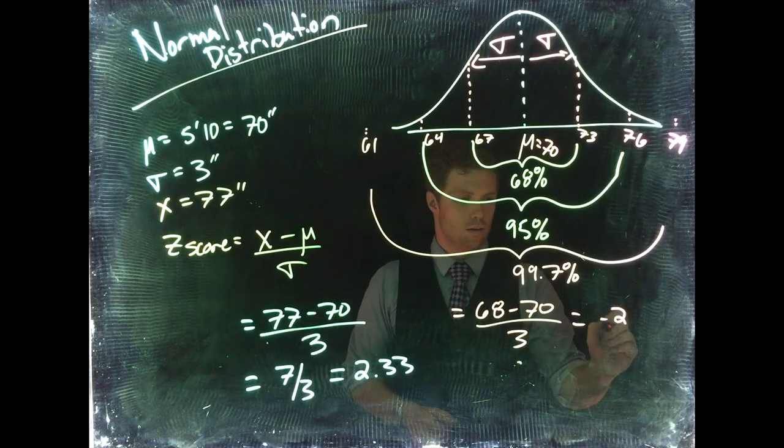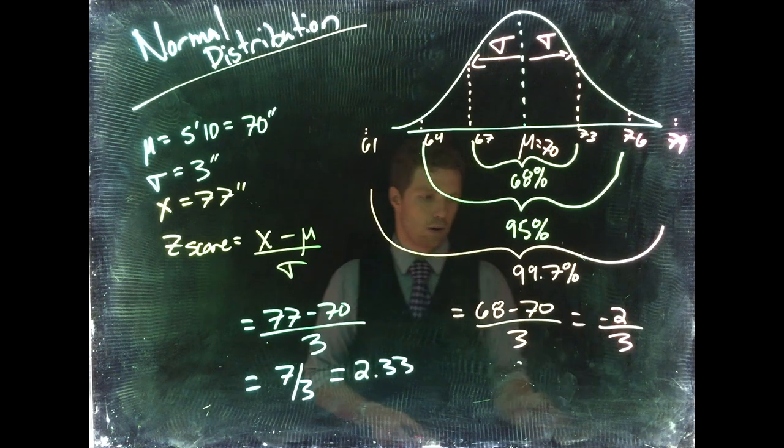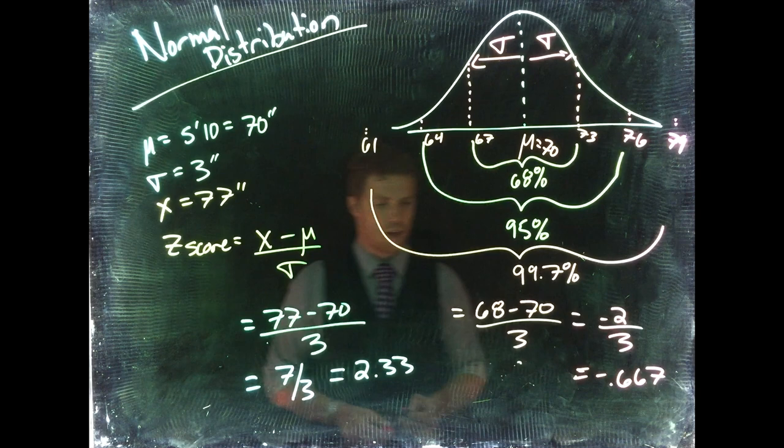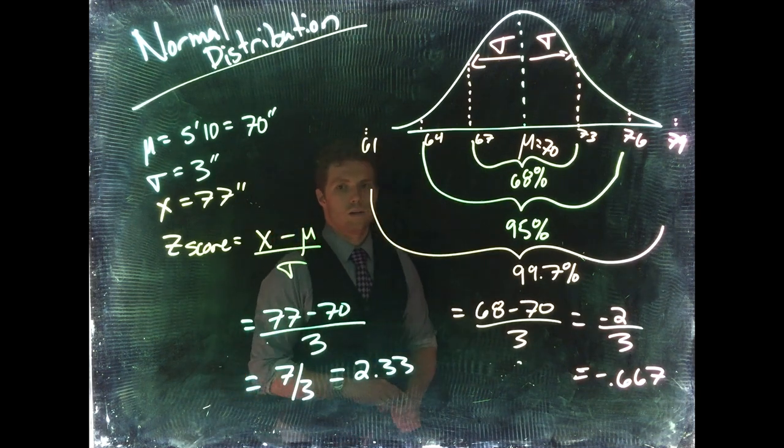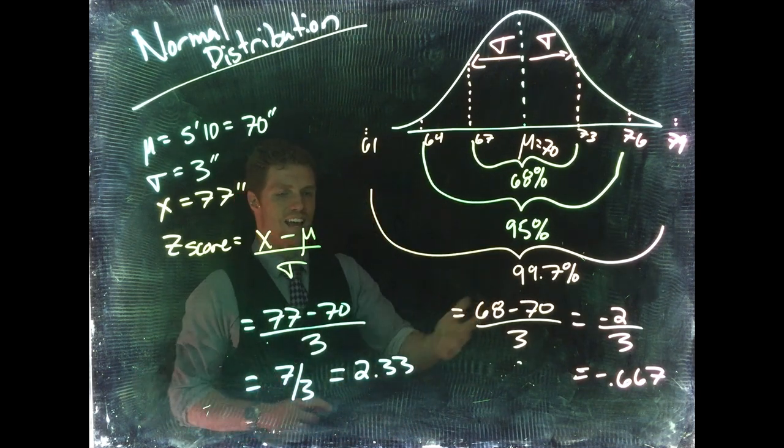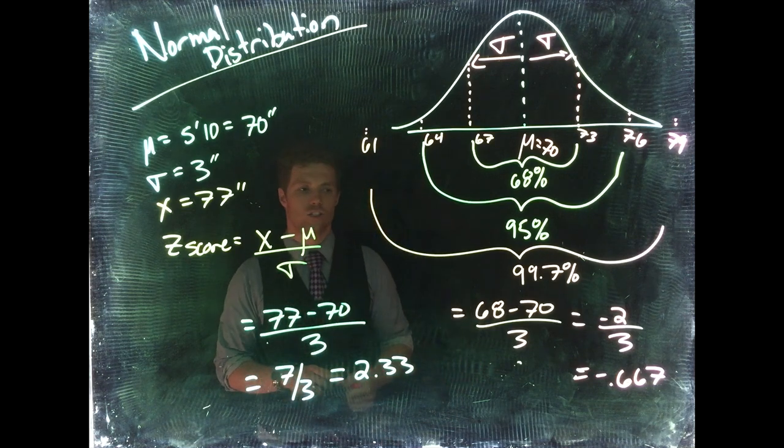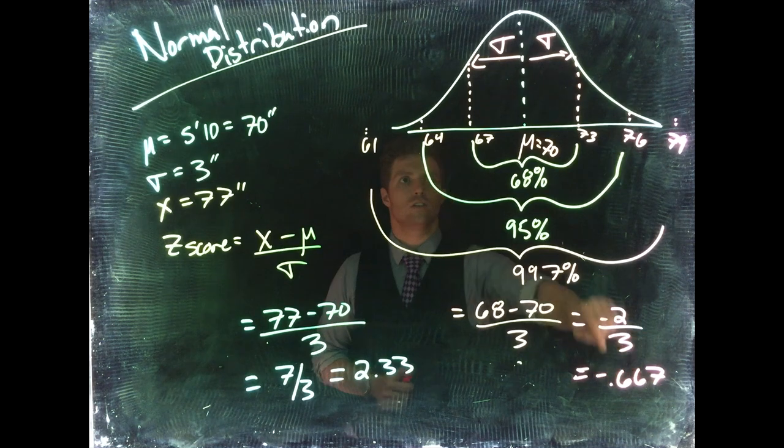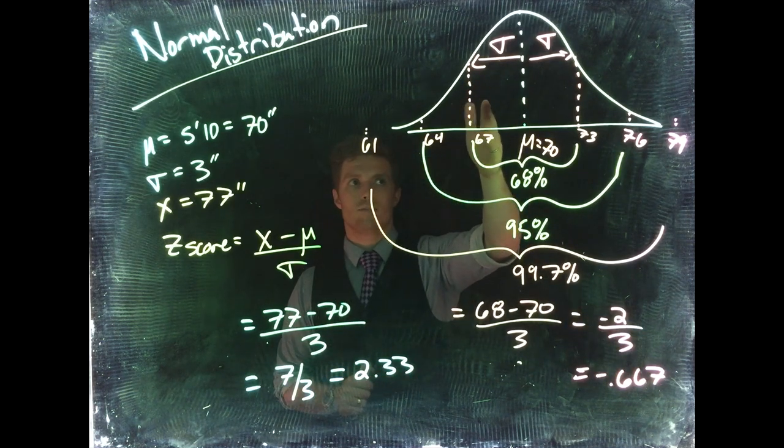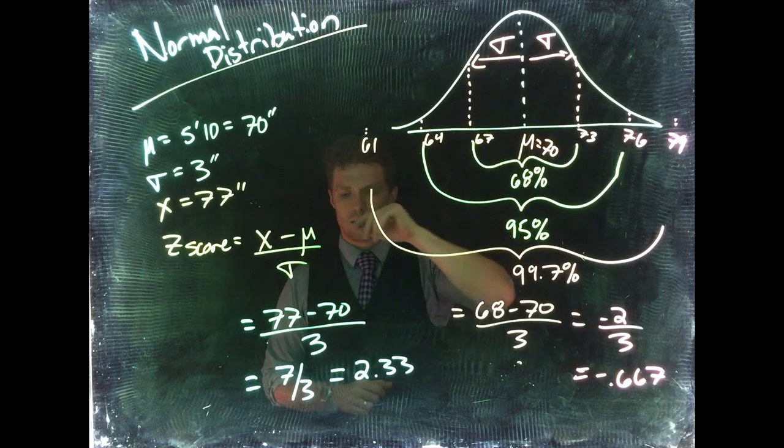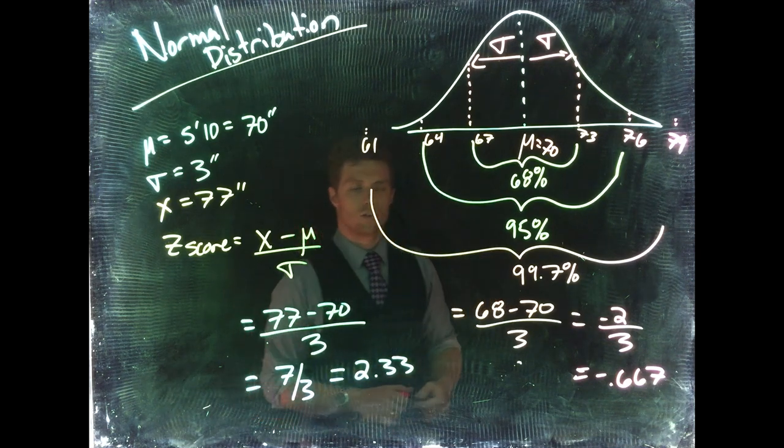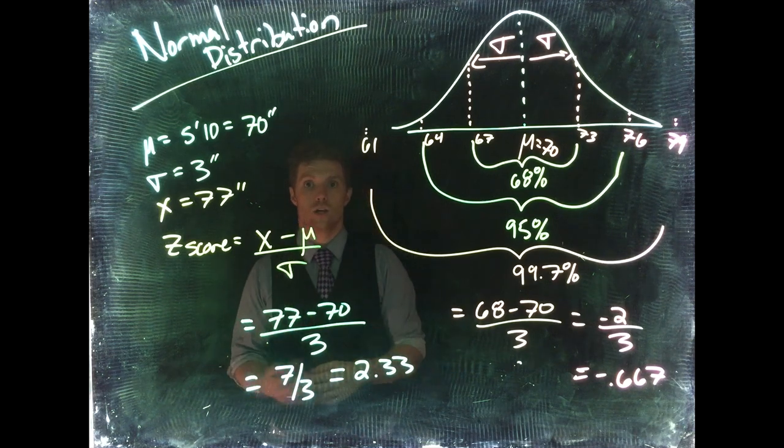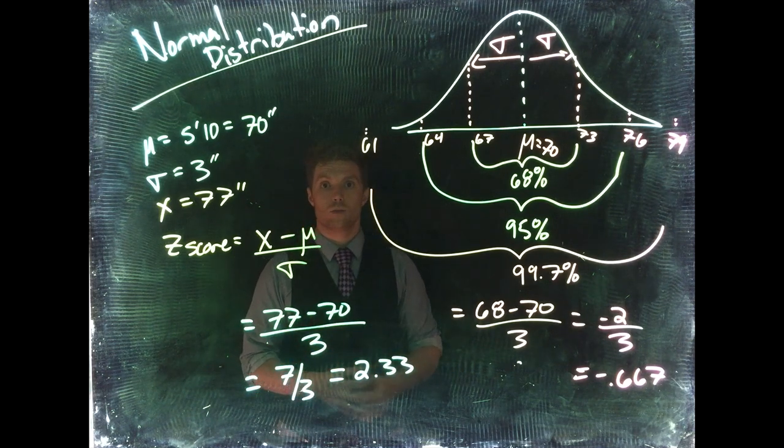This one equals 68 minus 70 divided by 3. That one's going to equal negative 2 divided by 3, which equals negative 0.667. Okay, so the guy who is 68 inches, or 5 feet 8 inches tall, he was only like two-thirds of a standard deviation away. It's negative, so he's to the left, but he's only two-thirds of a standard deviation away. And being 6 foot 5 is 2.3 standard deviations away. So we could say that it is more strange or more rare for someone to be 6 foot 5 than it is for somebody to be 5 foot 8.